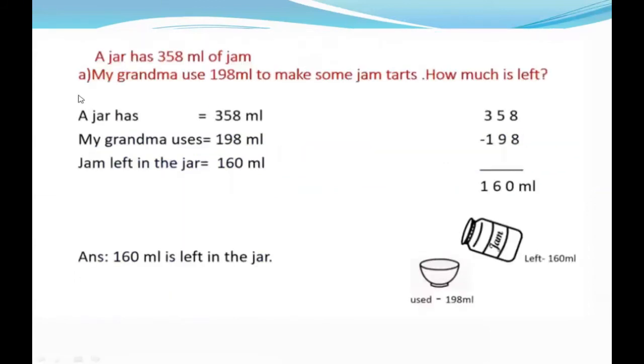Let's do one more. Look at this question. This is the A part. A jar has 358 milliliters of jam. My grandma uses 198 milliliters to make some jam tarts. How much is left? Look at this word 'left.' Whenever this word comes in your word problem, you always subtract. Left means how much remains—they are asking how much is remaining with you. So our jar has 358 milliliters. How much did my grandma use? 198.